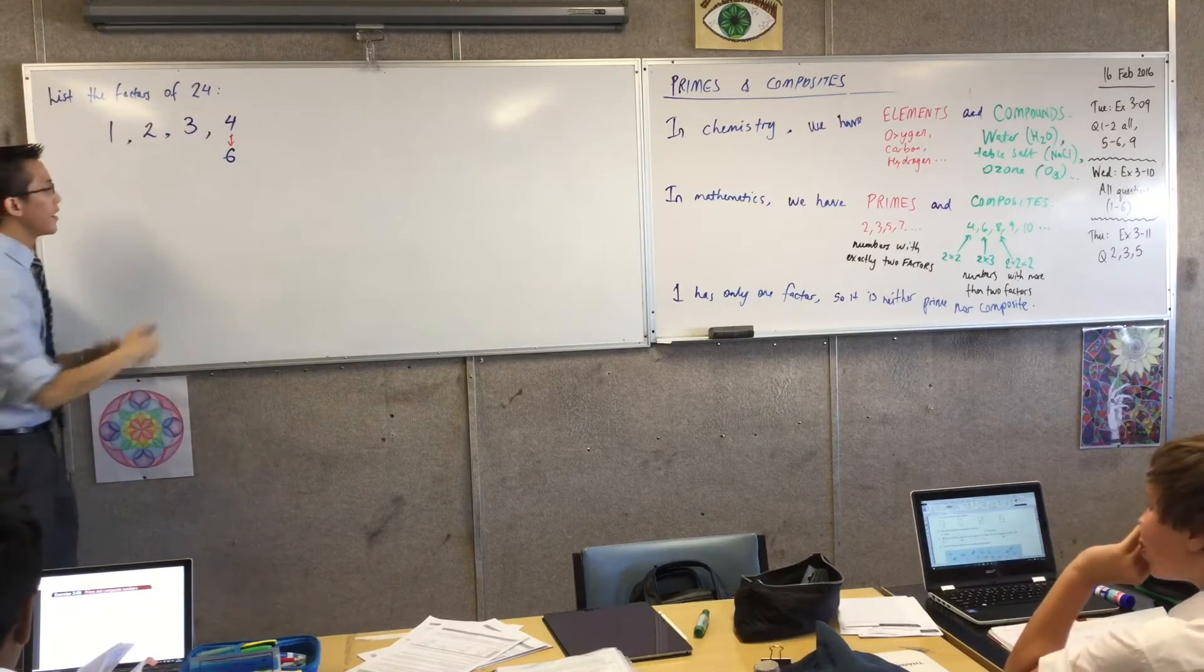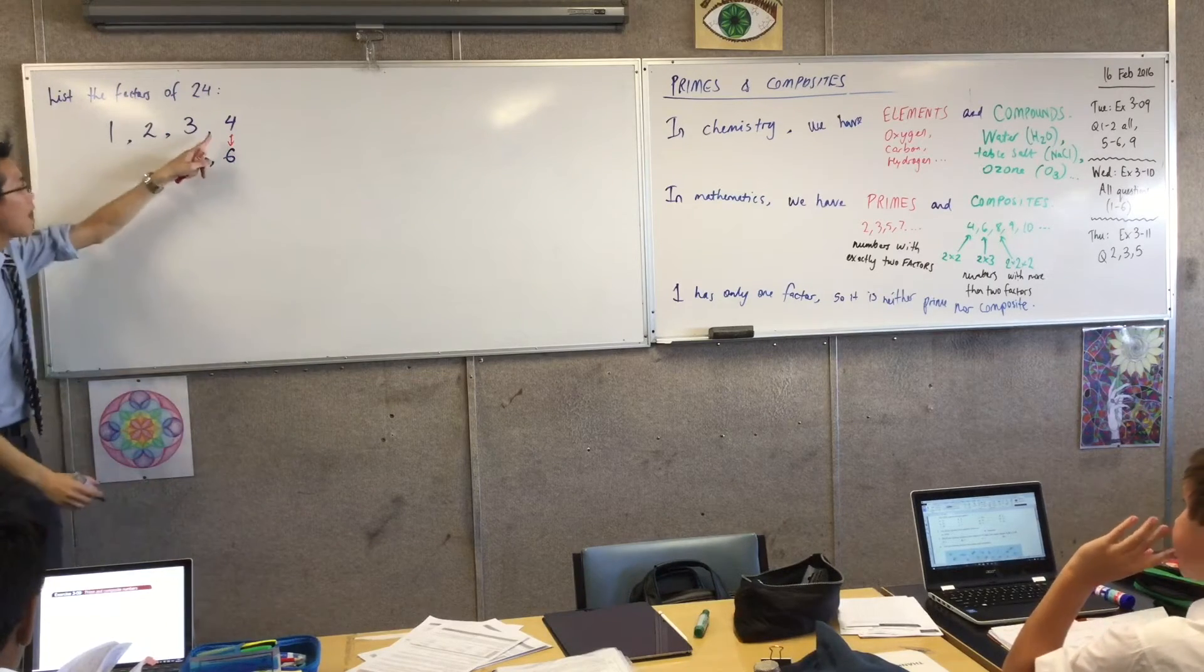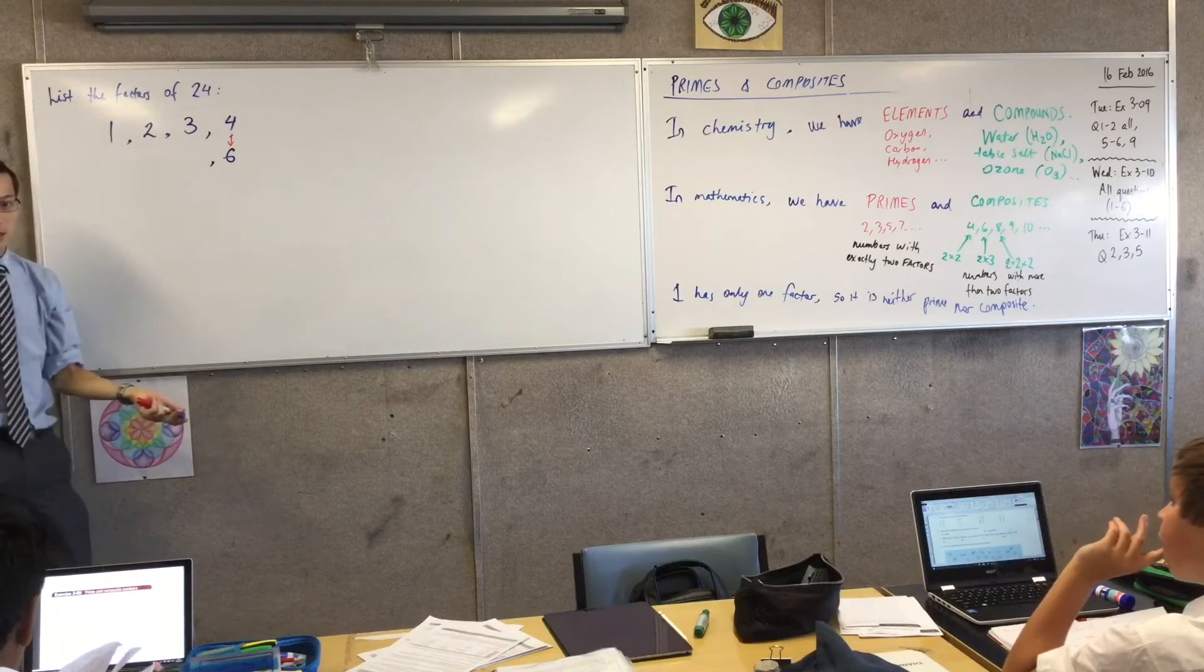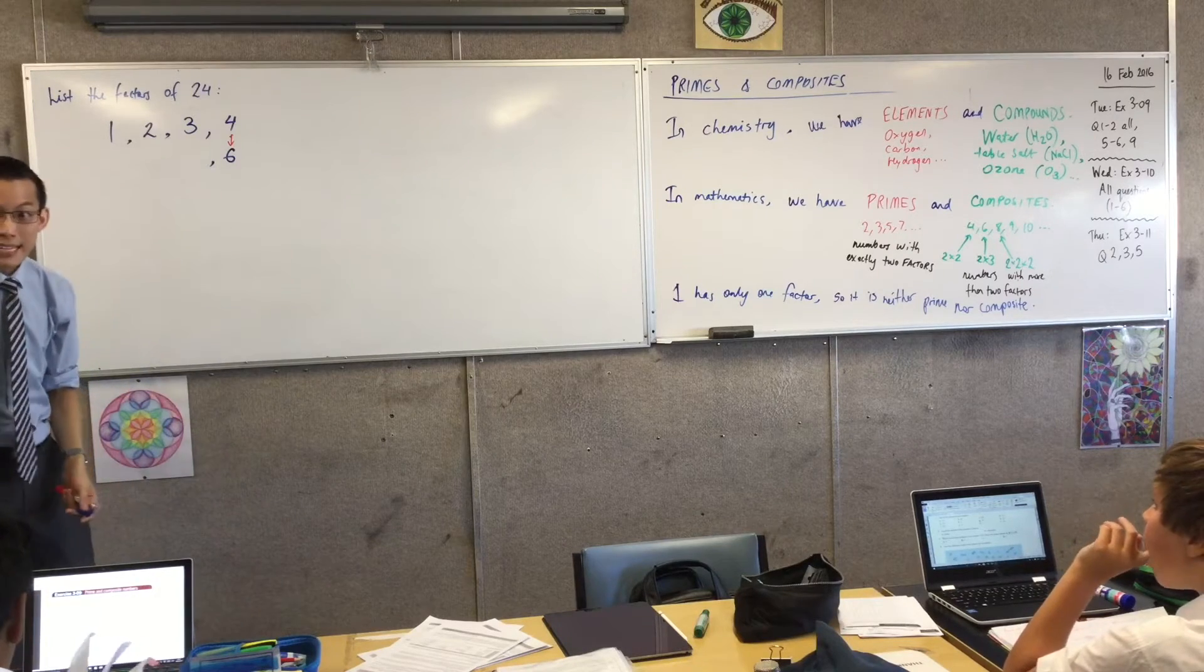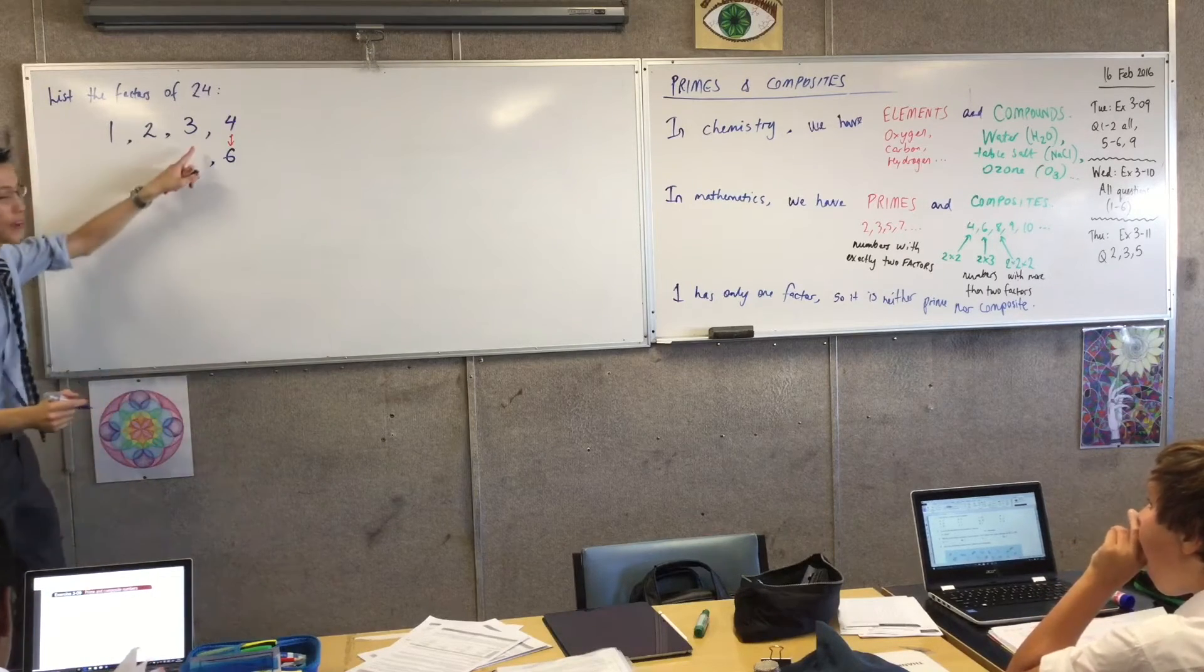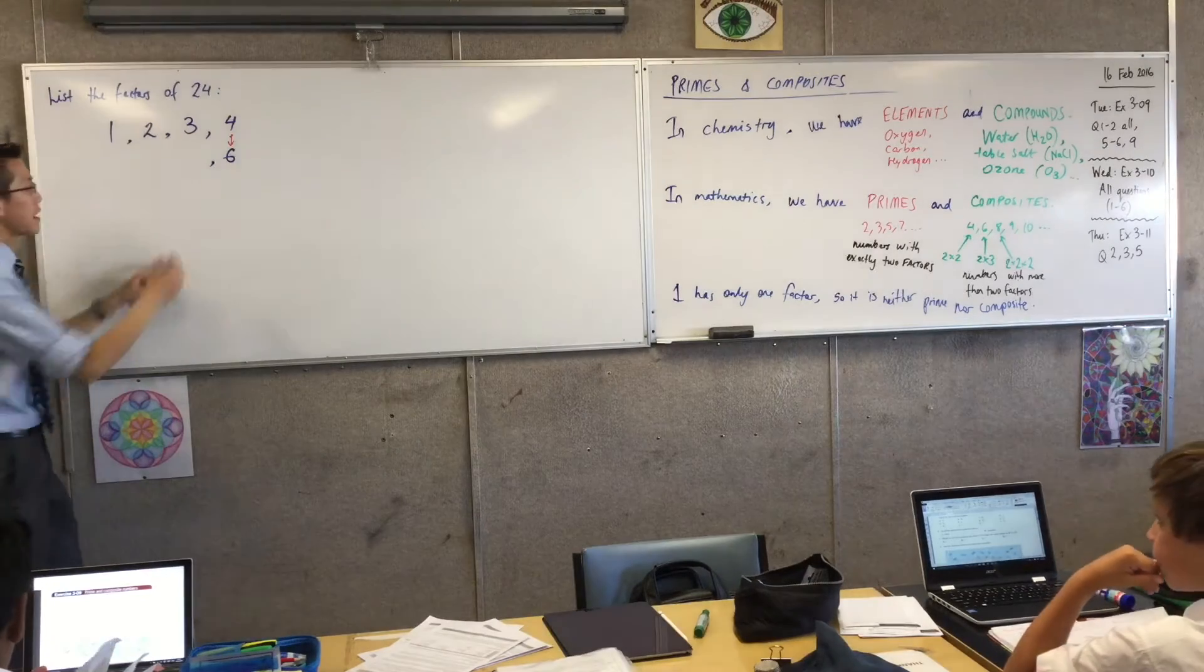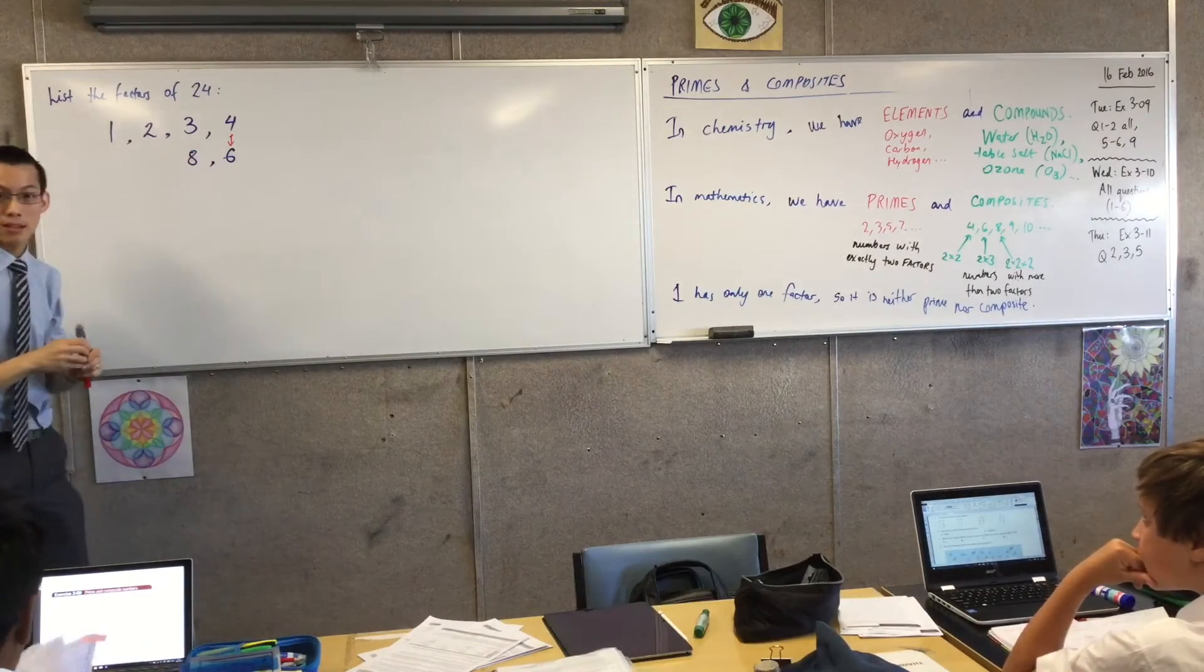As I keep going, I'm going to go backwards, and I'm going to pair up the other numbers. 7 doesn't divide through, but 8 does. What's 8 divided to? It's going to be 3. So you see I've got another pair there.